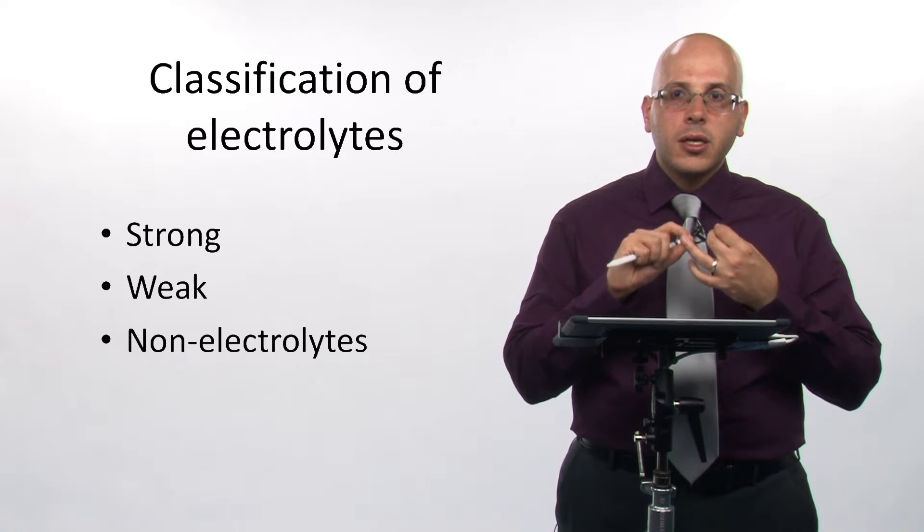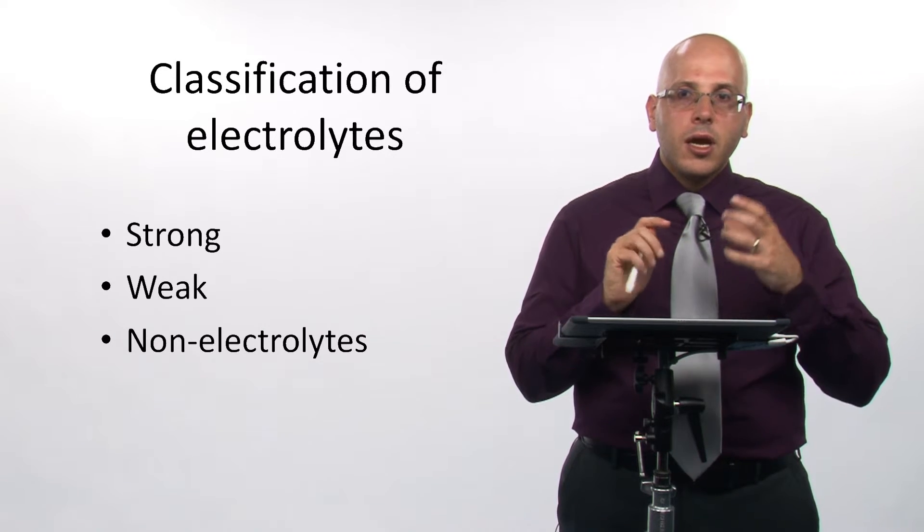Strong bases are all of the hydroxides from the alkaline metals. So things like lithium hydroxide, sodium hydroxide, potassium hydroxide, rubidium hydroxide, cesium hydroxide, and then the bottom part of group 2. So calcium hydroxide, strontium hydroxide, and barium hydroxide, but not the top part. So not magnesium and not beryllium.